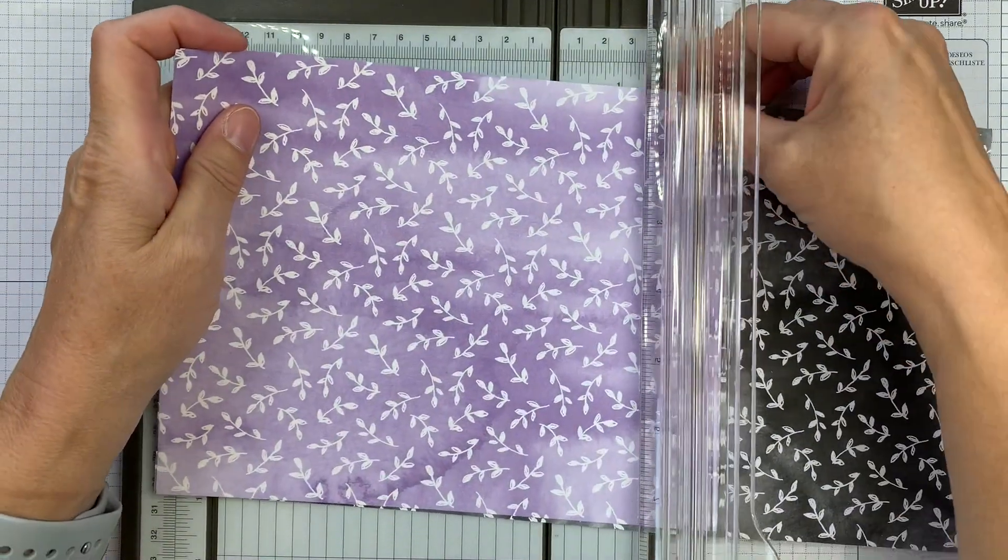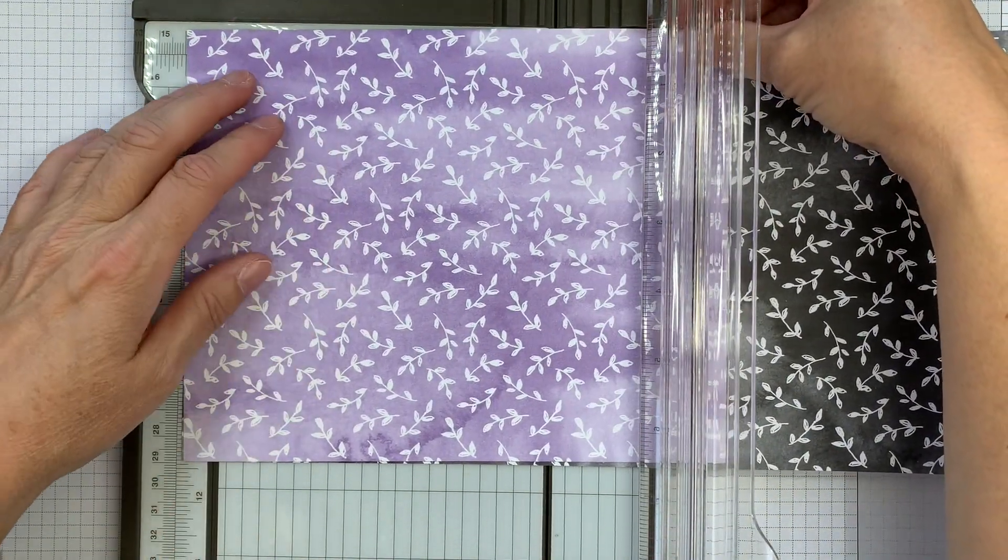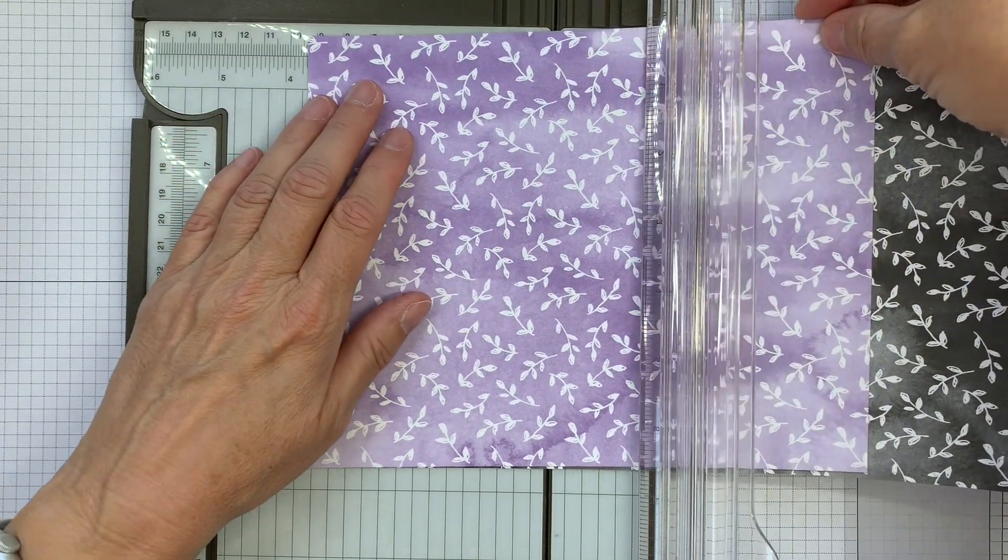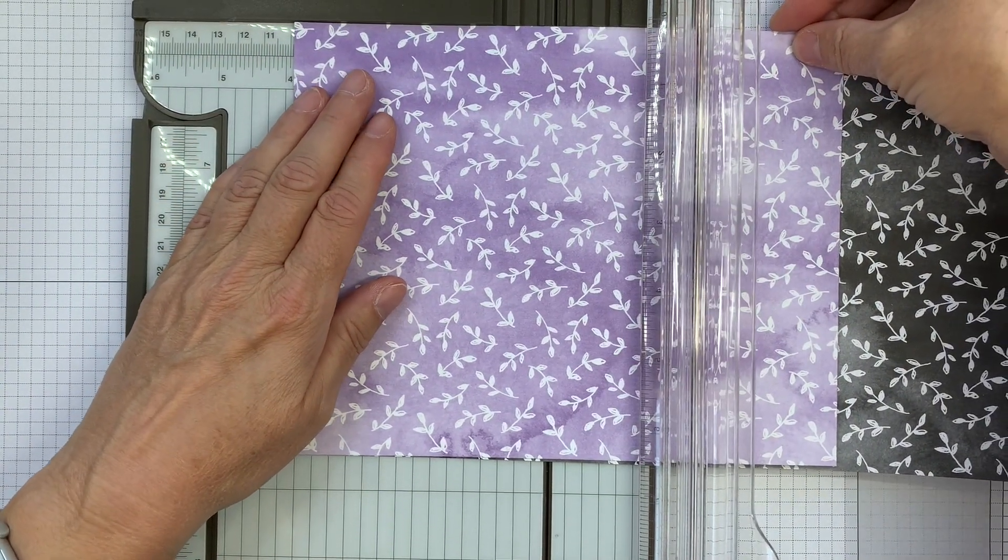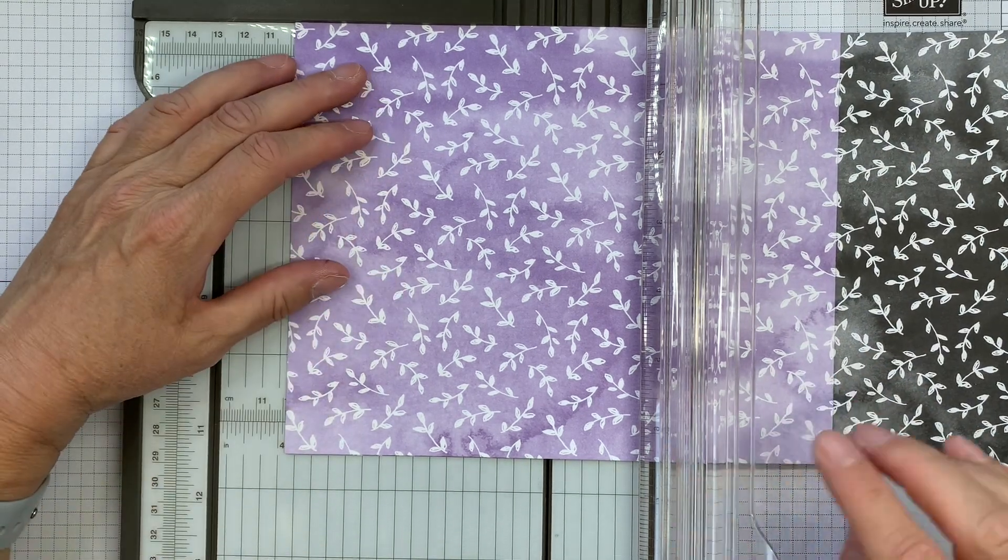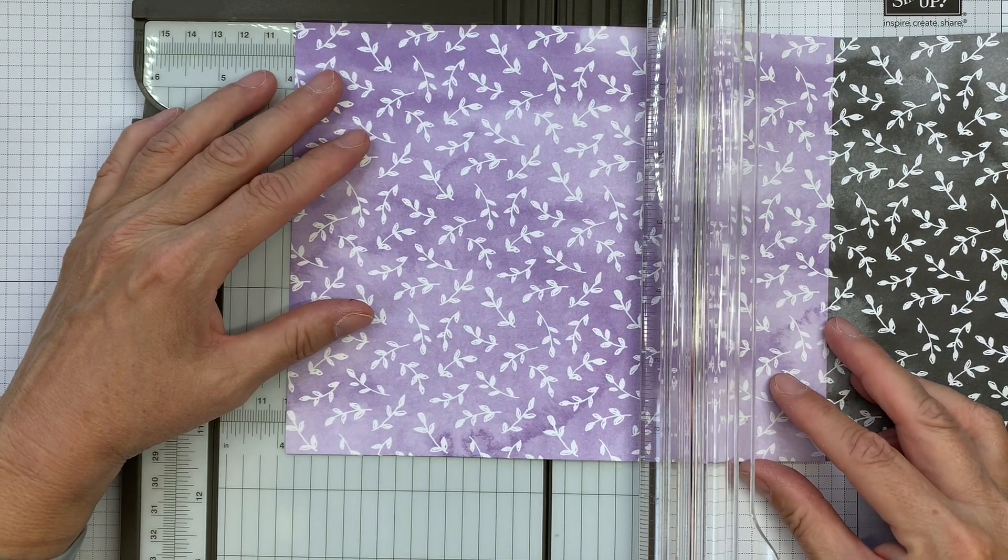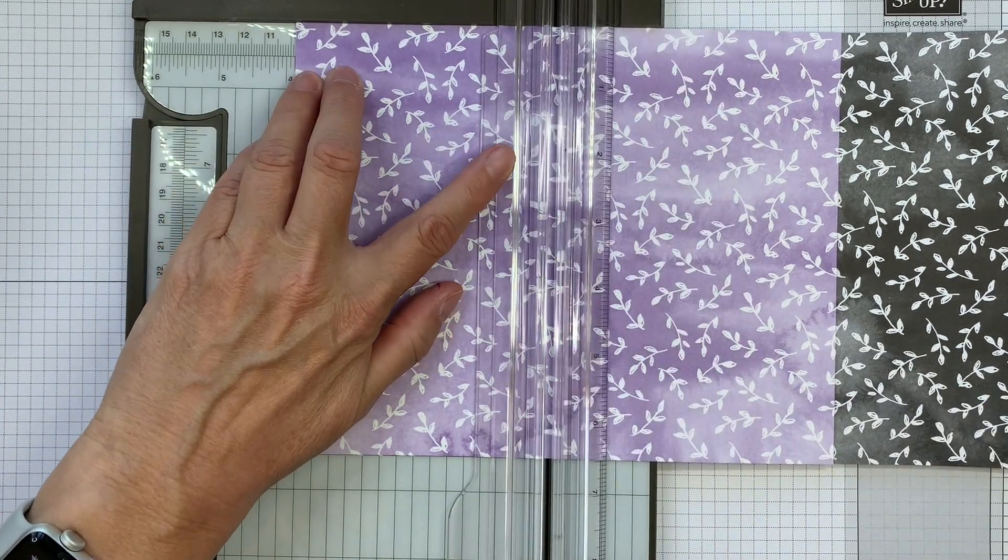Lift that up and I want to cut these at 3 and 7/8ths. Just trying to remember then. And again I'm just making sure that that is fully lined up. We've got a nice alignment of them there.